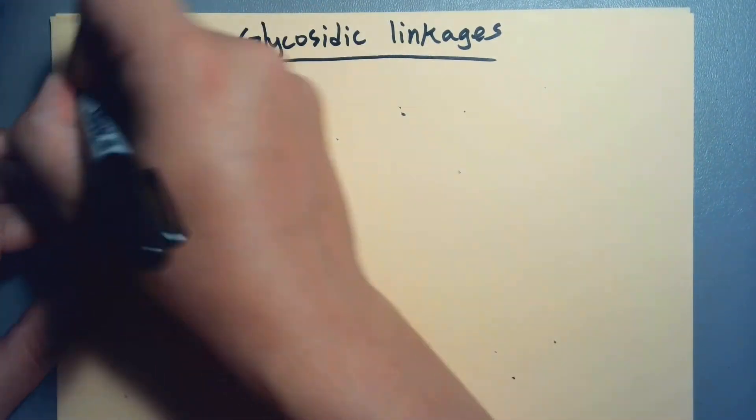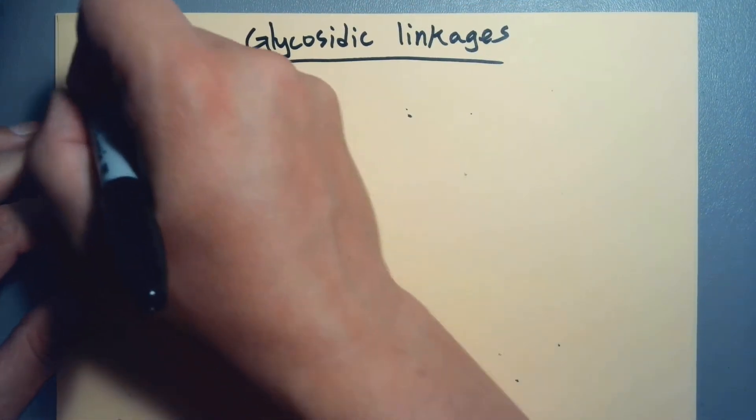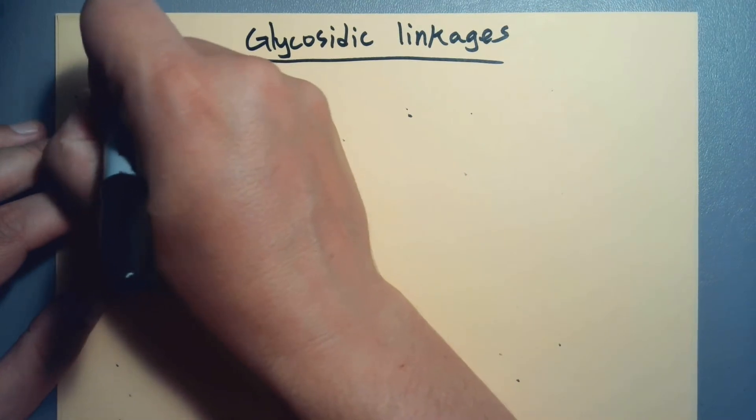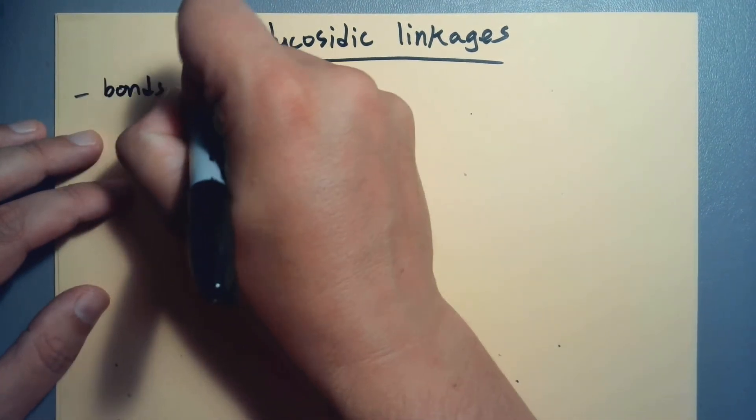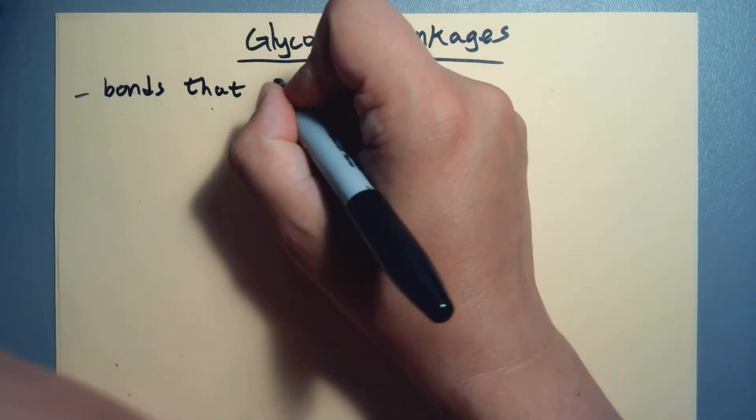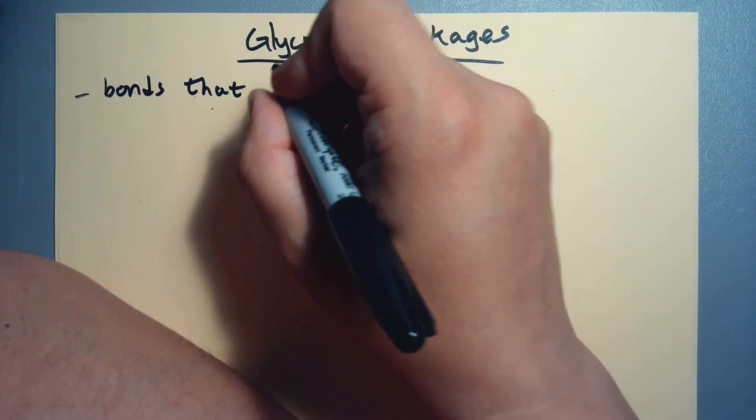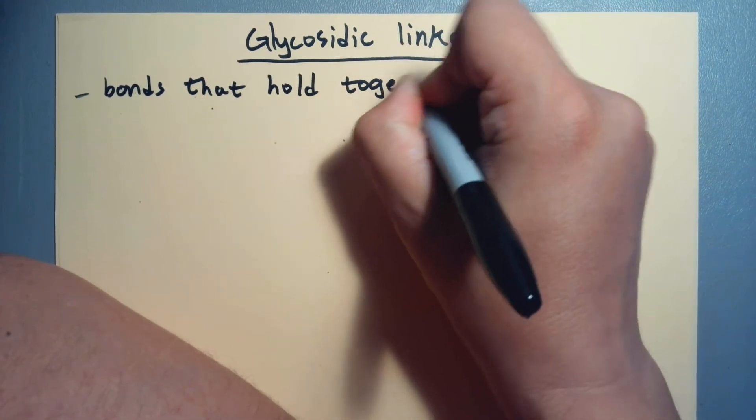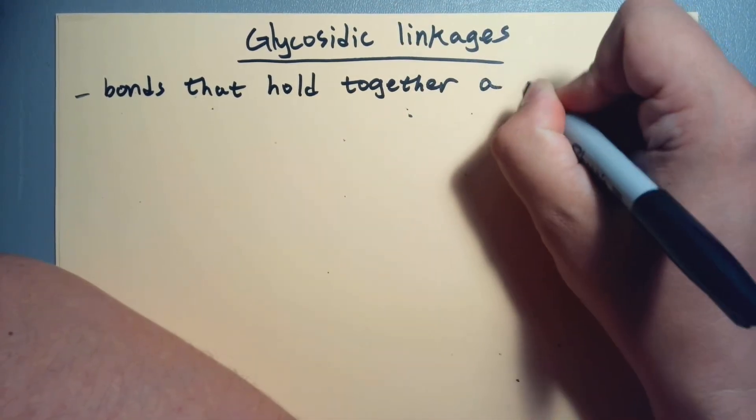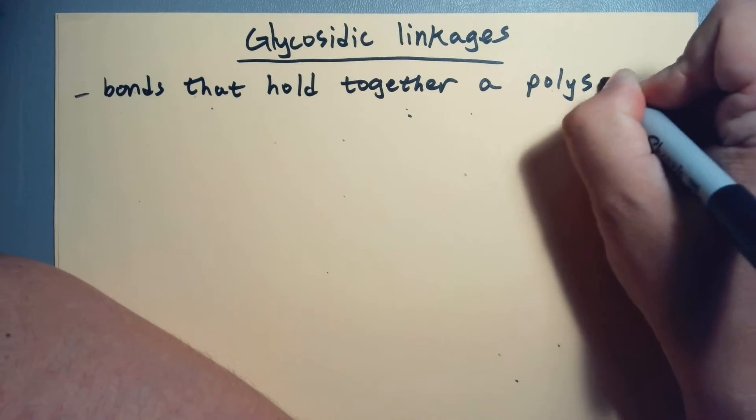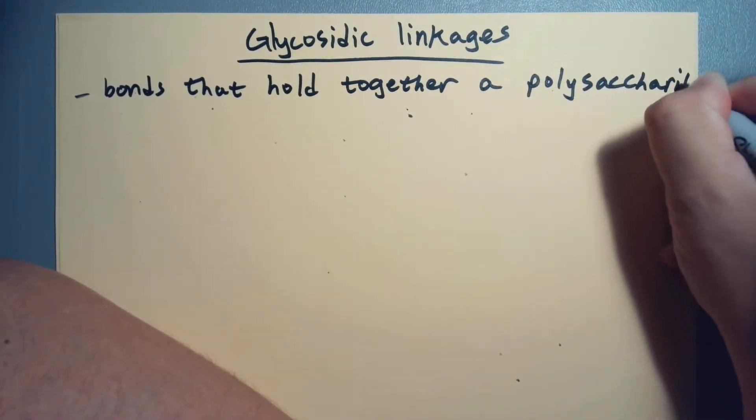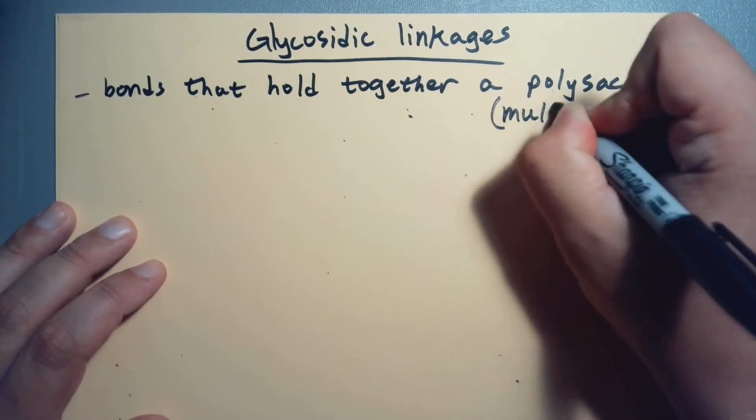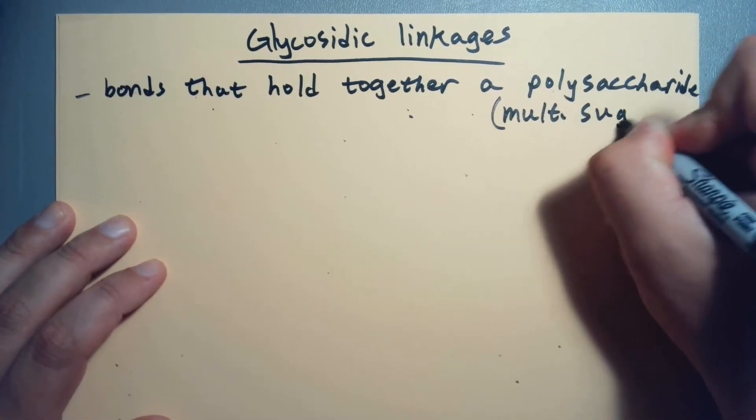But to be clear, what are we talking about here? Well, these are the bonds that hold together a polysaccharide, or multiple sugars. So multiple sugars, that's what we're talking about here.